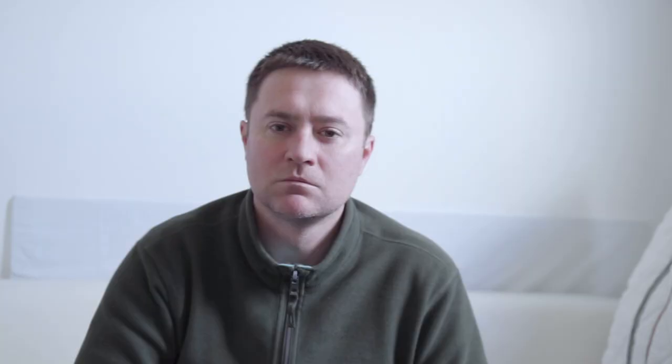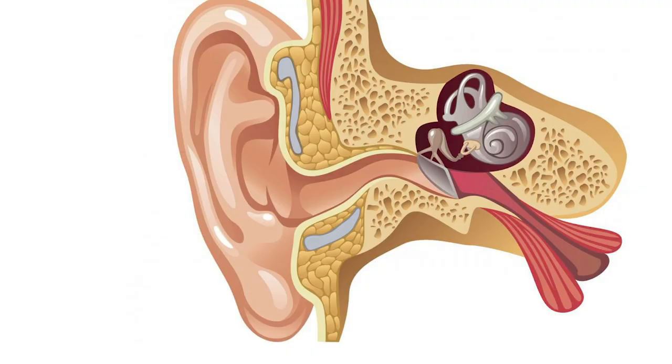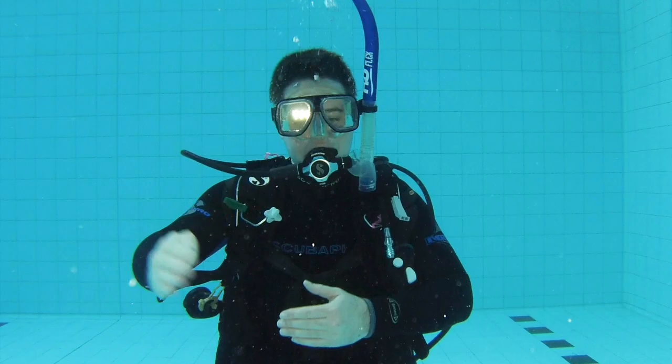When you descend, you equalize your ears by blocking your nose and blowing gently against your blocked nose. On the way down, you do that early and often to stop the air bubble in your eustachian tube from collapsing and rupturing your eardrum. On the way back up, that air will expand and escape naturally back into the air you breathe out. You must, however, always breathe and never hold your breath.